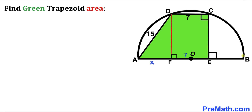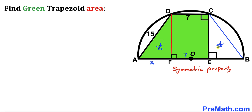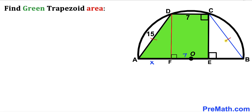Let me connect points B and C. Right triangle AFD and right triangle BEC are identical triangles according to the symmetric property. Therefore side length AD equals side length BC — if AD is 15, then BC is 15 as well. Moreover, segment AF equals segment EB, so if AF is X, then EB is X units as well.